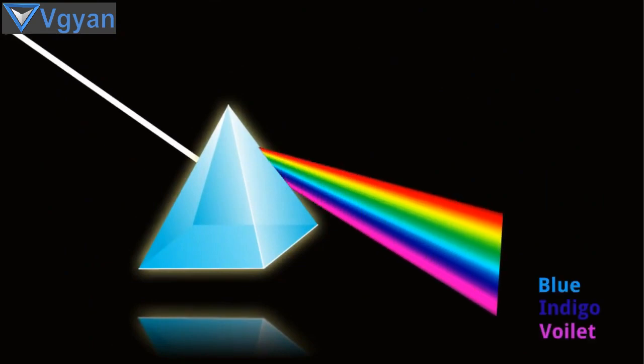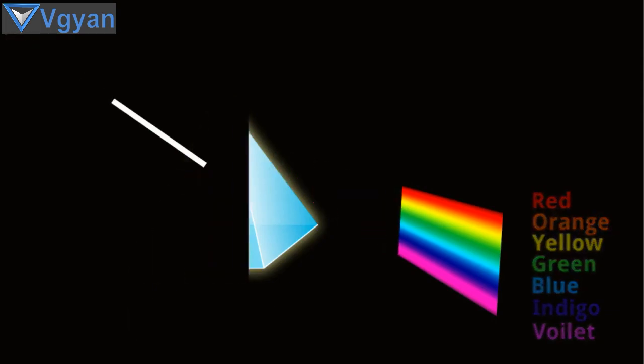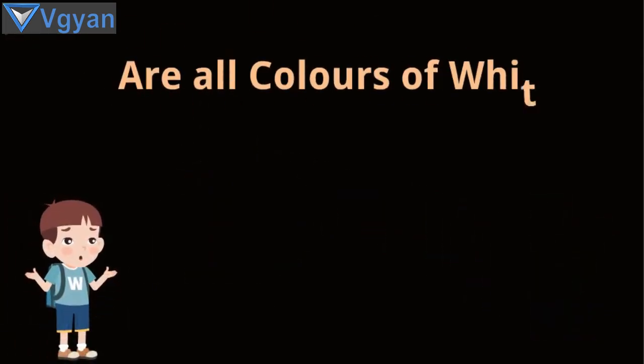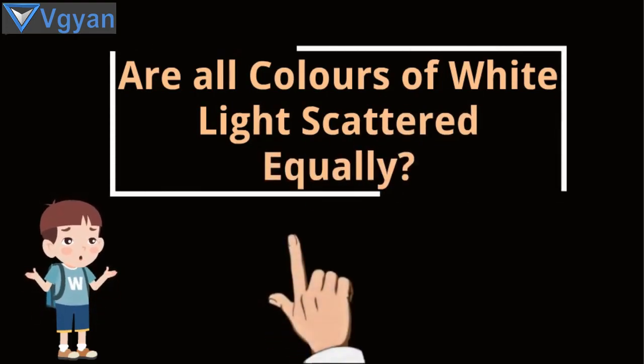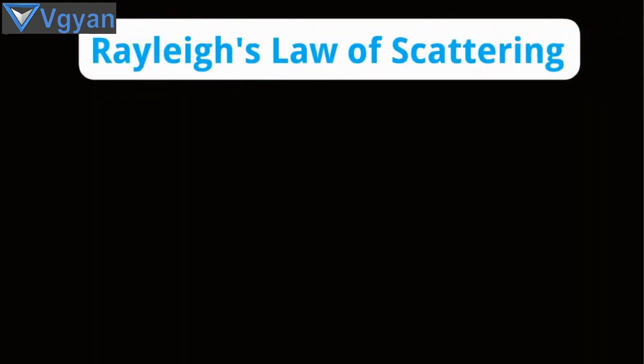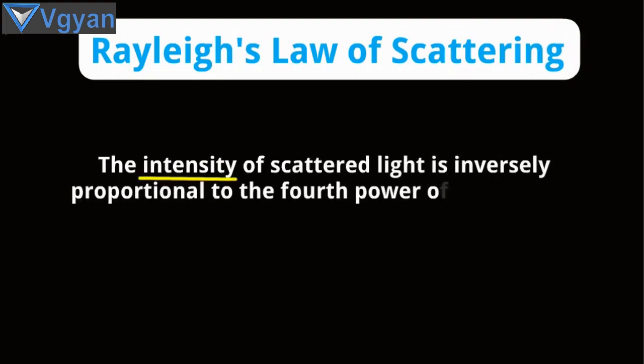So are all colors present in sunlight scattered equally? The answer is no. The intensity of scattered light is defined by Rayleigh's law of scattering. According to this law, the intensity of scattered light is inversely proportional to the fourth power of wavelength of light.